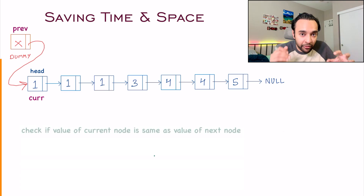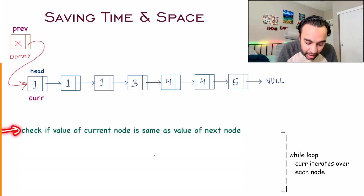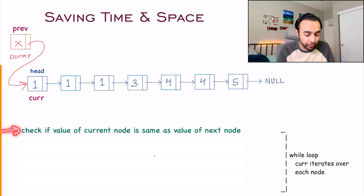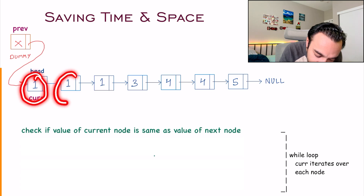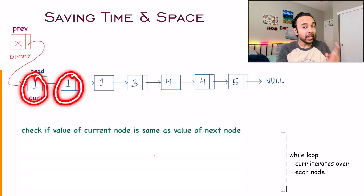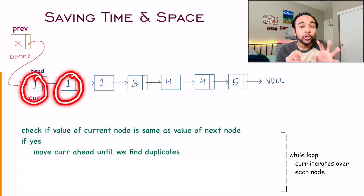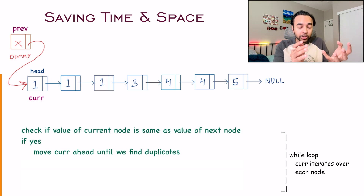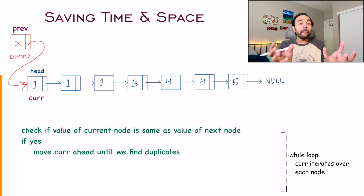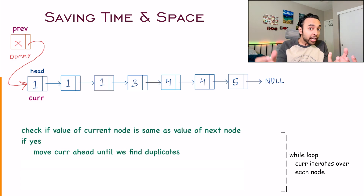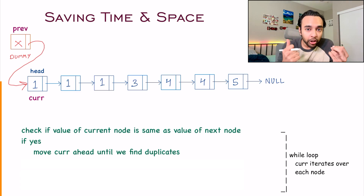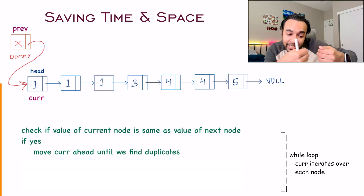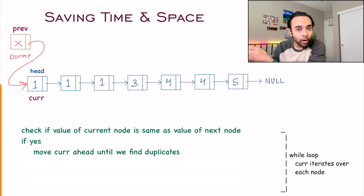So in every iteration, we check if the value of the current node is the same as the value of the next node. If yes, that means you are at a duplicate. Once you have found that you are at a duplicate, you know that there can be more duplicates ahead. So you will run a loop inside this to find out all the duplicates.